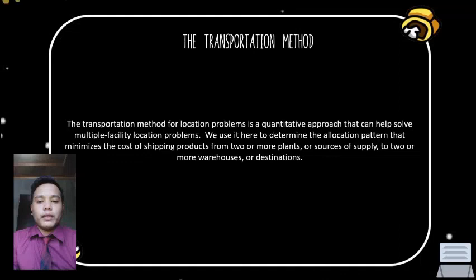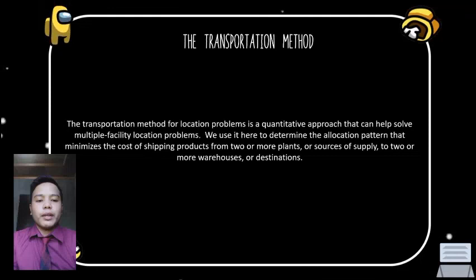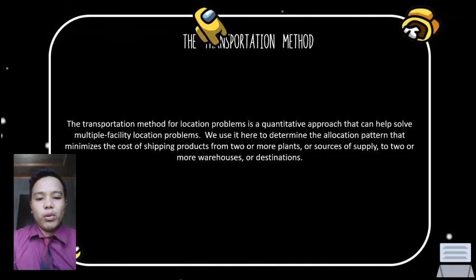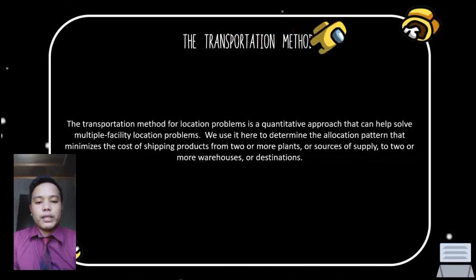The transportation method for location problems is a quantitative approach that can help solve multiple facility location problems. We use it to determine the shipment pattern that minimizes the cost of shipping products from two or more plants or sources of supply to two or more warehouses or destinations. This method helps to describe a phenomenon across a larger number of participants, providing the possibility of summarizing characteristics across relations or groups.